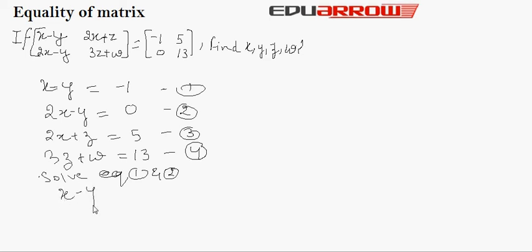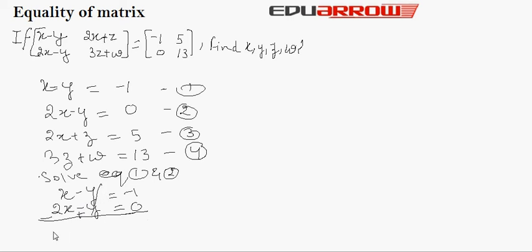Solving equation 1 and equation 2: x minus y equals minus 1 and 2x minus y equals 0. Subtracting equation 1 from equation 2, the y terms cancel out, giving minus x equals minus 1, or x equals 1.